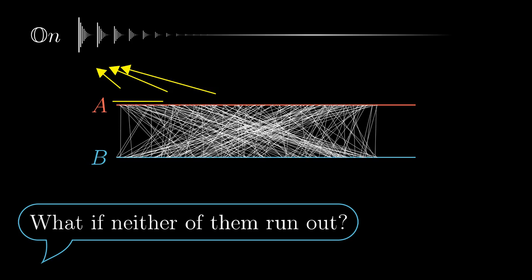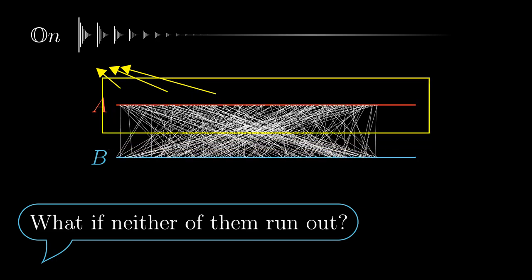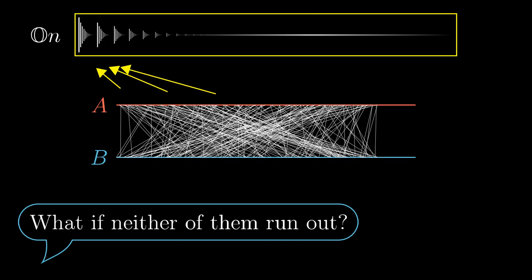However, these edges form a set — a subset of the Cartesian product A×B. So by the axiom of replacement, all the ordinal numbers must also form a set, and that is a contradiction. As we saw in the chapter about paradoxes, there cannot be a set containing all the ordinal numbers. Therefore the process must stop at some point, so there is a matching covering at least one of the sets.